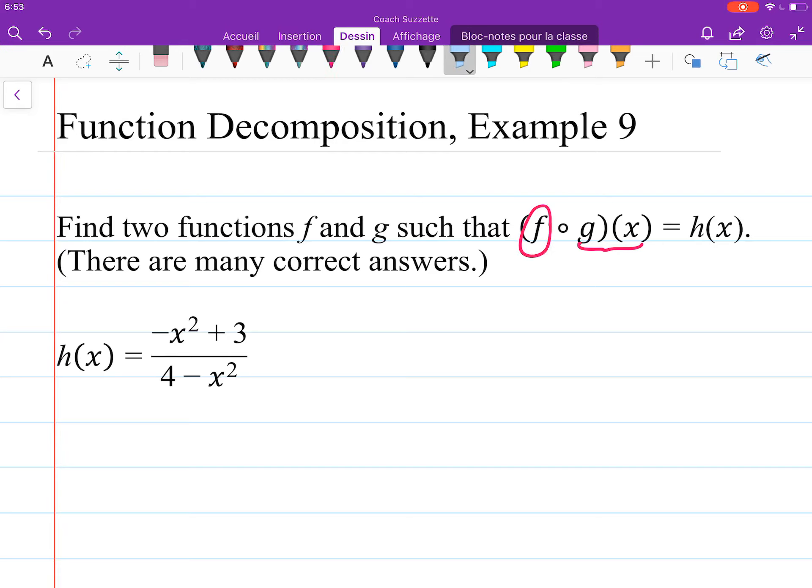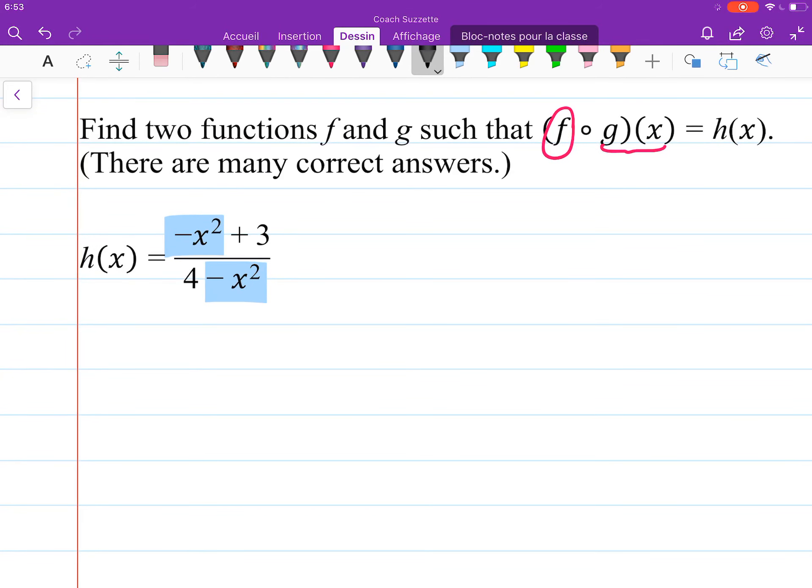Let's notice what we have here. This and this are identical. So that could be the inner function that's being substituted into the outer function. So if we say the inner function g of x is equal to negative x squared,